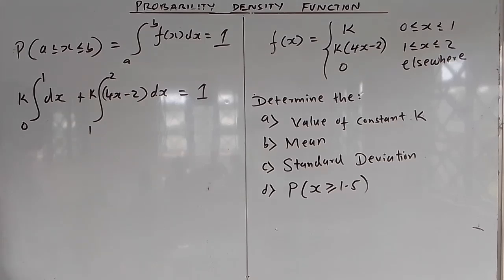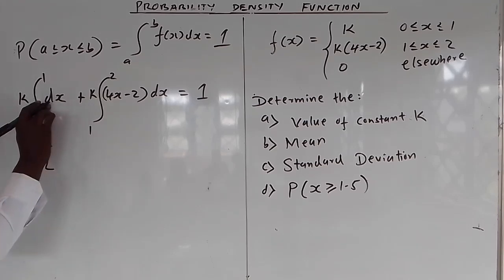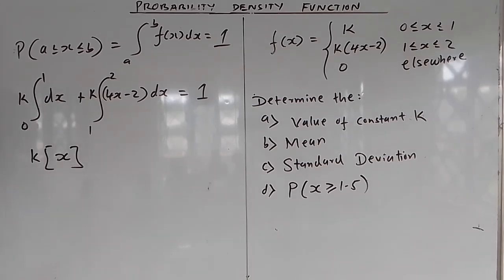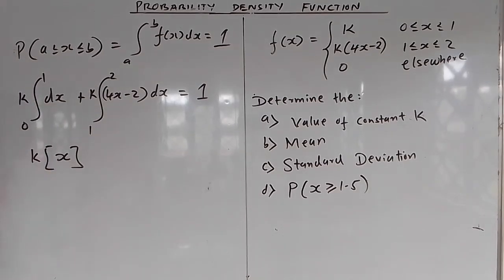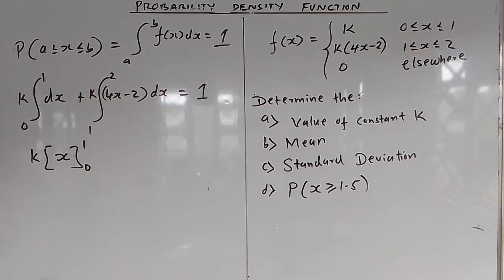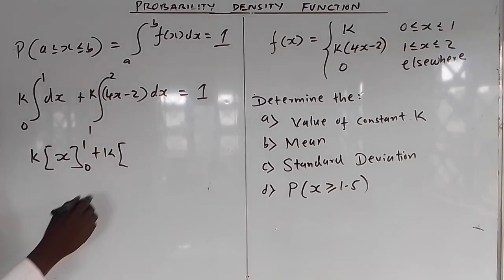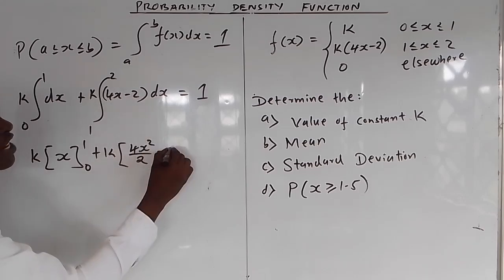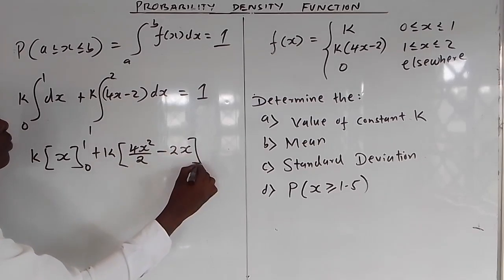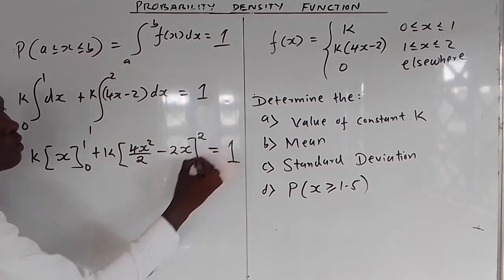Setting the total integral equal to 1: start with the first integral. Integrate k from 0 to 1 — integrating x to the power 0 gives x to the power 1. The interval is from 0 to 1. Then plus k times the integral from 1 to 2 of (4x − 2) dx. If you integrate 4x you get 4x² over 2, and integrating 2 gives 2x. The limit is from 1 to 2, and the whole expression equals 1.